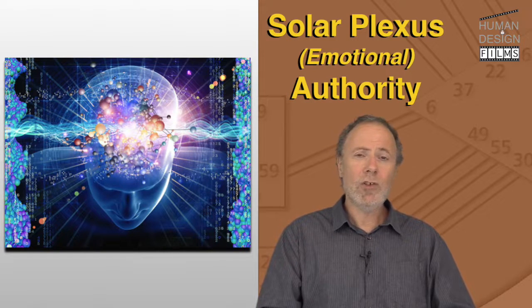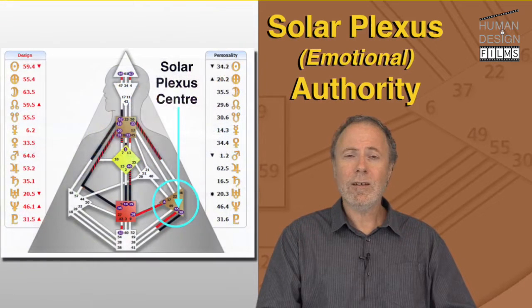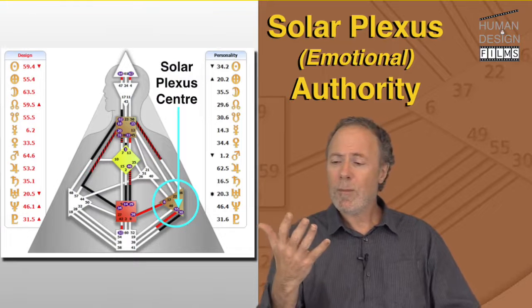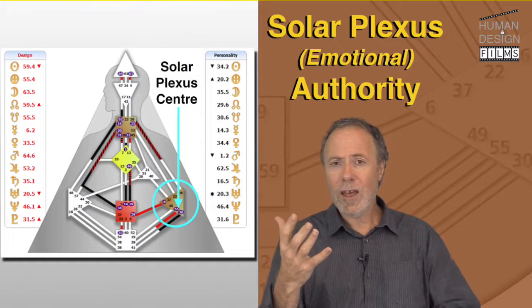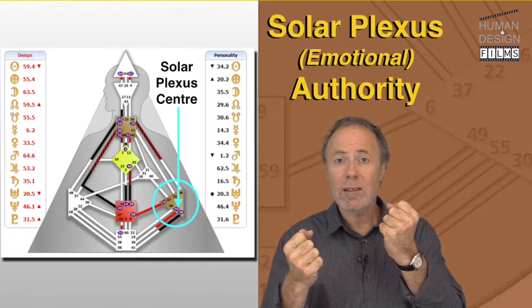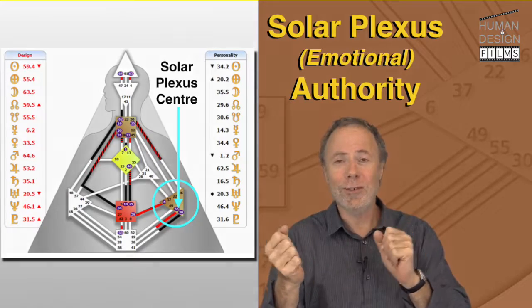The emotional center, in human design we call it the solar plexus center, is basically a mixture between awareness and a motor. So you generate emotions all the time. You do. It's what you do.